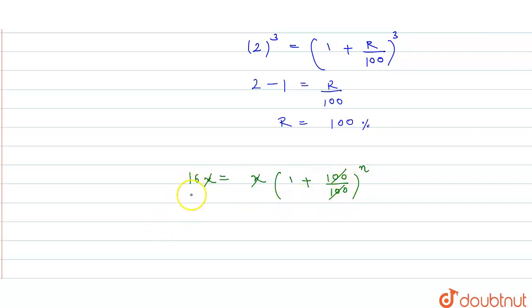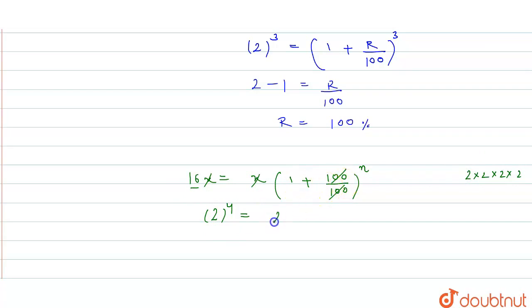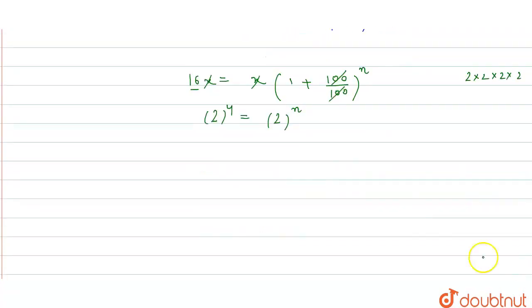Now, 16 can be written as 2 to the power 4. So 2 to the power 4 equals 2 to the power n. Since the bases are the same, we can equate the exponents. Therefore n equals 4.